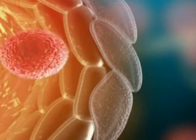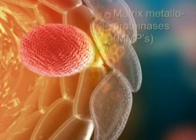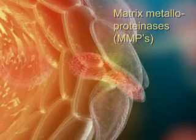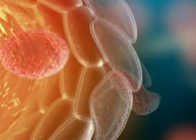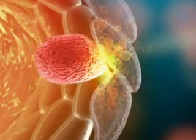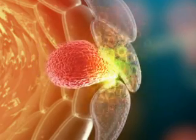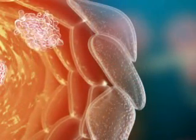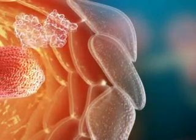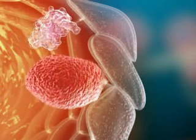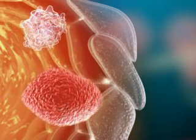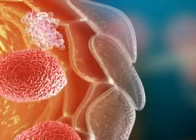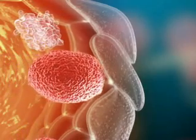Matrix metalloproteinases, MMPs, produced by T cells, facilitate the transport of inflammatory cells into the brain. Interferon beta decreases the production of MMPs. Thus, the influx of T cells into the CNS is reduced, and gadolinium-enhancing lesions resolve rapidly.